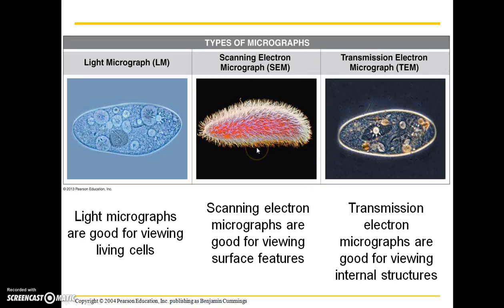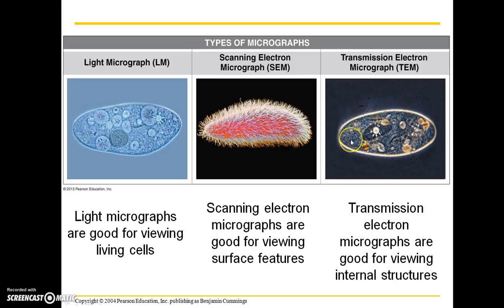There are also scanning electron micrograph images. These are good for viewing surface features, such as cilia or flagella — basically fine surface features of very small things such as cells. And then we have transmission electron micrographs, which are good for viewing internal structures. So if you wanted to examine a non-living specimen on a glass slide, you would probably use a transmission electron micrograph.